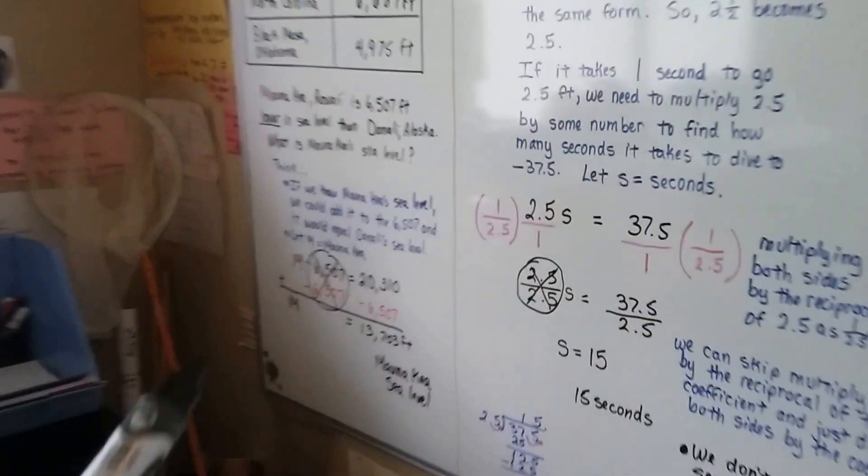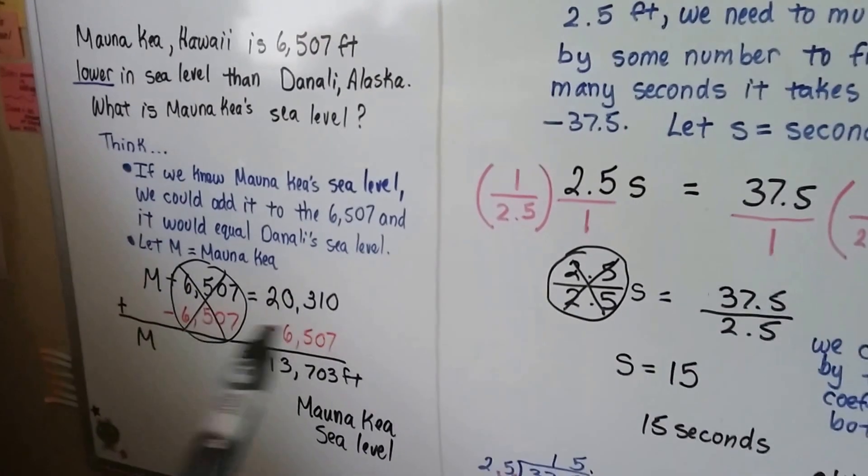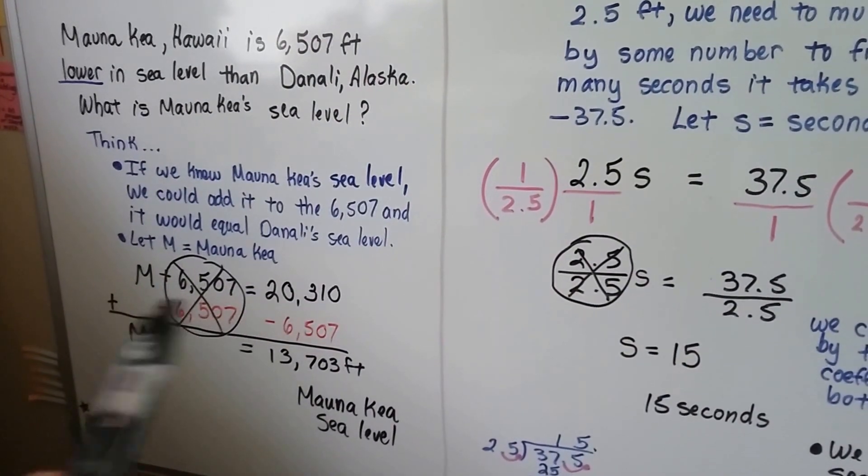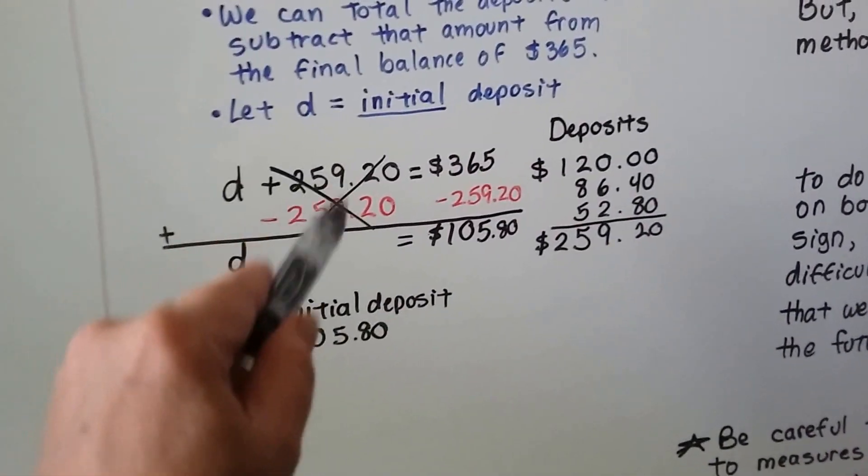But, by learning to use this method, the first one was the addition property of equality. That's when we add or subtract the same amount from each side of the equation. That's the addition property of equality. We're making these equal so that it creates a zero pair.